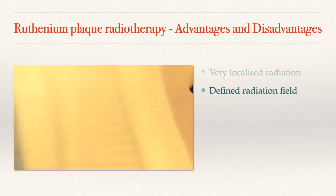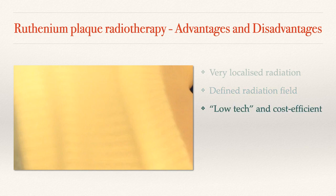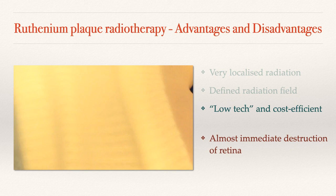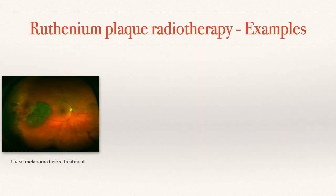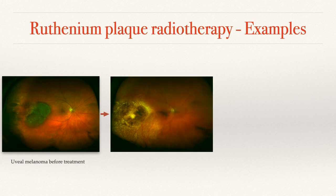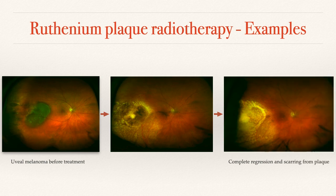The plaque can give a very specific type of radiation field. It's very cost-efficient and gives very rapid destruction of the tumour, but also rapid destruction of the retina around it. It can be very surgeon-dependent because it is so precise. We use these plaques for small to medium-sized melanomas. If you use a plaque on a small tumour, you can see the disc of scar around where the tumour has completely regressed from the plaque treatment — a very good result.